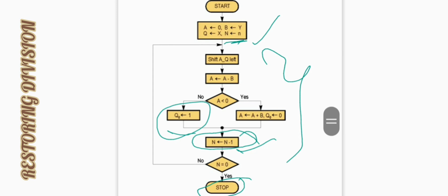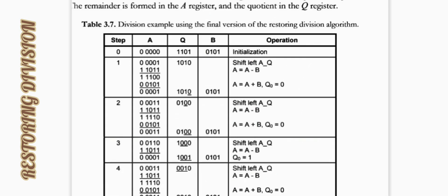So this is about the flowchart. Now we will see how to perform this operation — how to apply the division. Let's see the question: divide X equals 13 by Y equals 5.